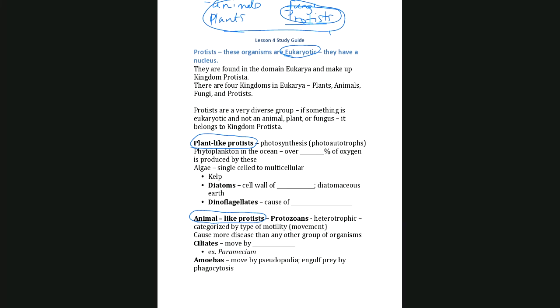They're not actually plants, animals, or fungi — but based on their characteristics we associate them with those types. Plant-like protists have the ability to photosynthesize — they are photoautotrophs, meaning they can make their own food with sunlight, just like a plant. They don't get enough credit: they make up the phytoplankton in the ocean and produce over 50% of the oxygen on Earth. Algae are the plant-like protists.